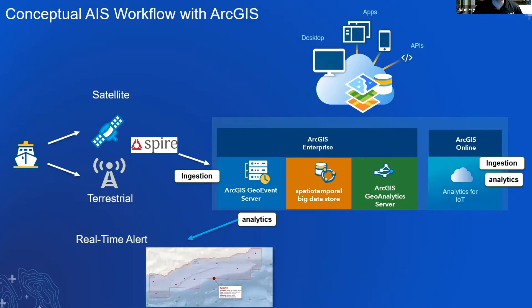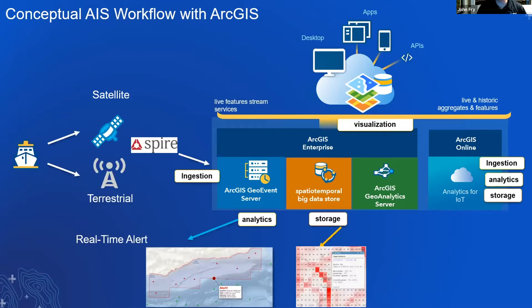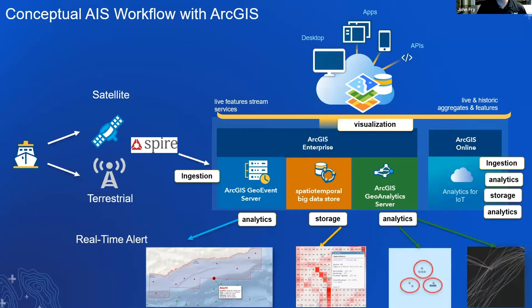I'm running some analytics on the fly — this could be a geofence where a ship of a certain type enters an area and we send an alert or an email. I'm also storing that information in the spatiotemporal big data store, which handles large amounts of data. Some clients want years or months of AIS data. Once stored, we can run batch analytics such as joins for transshipments, tracks, and dwell locations.